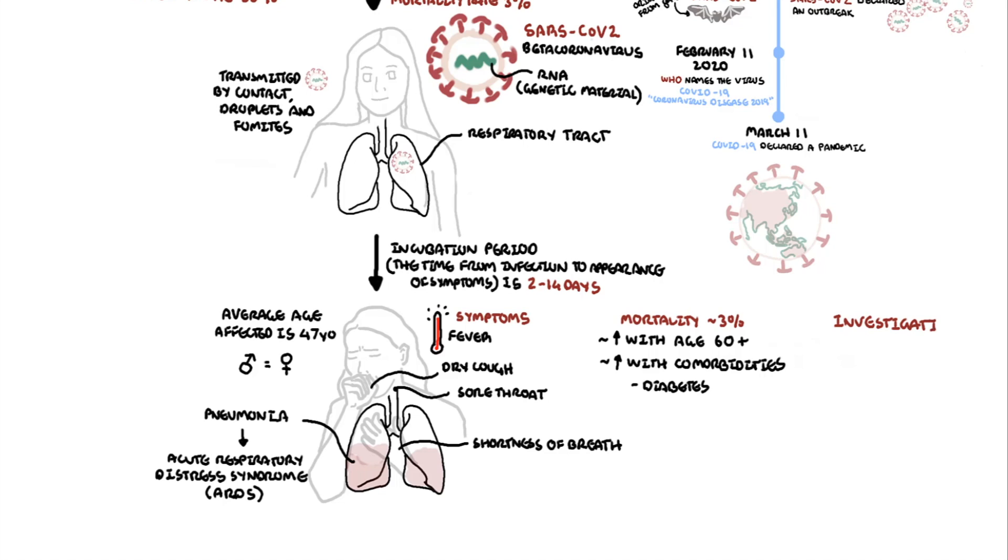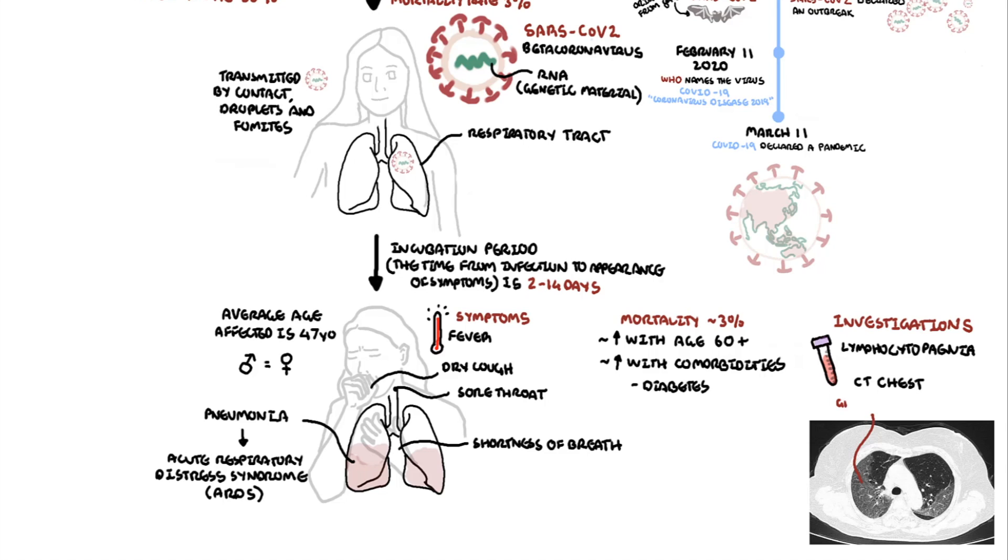Investigation findings of people infected with COVID-19 are lymphocytopenia, so low lymphocyte count in the blood, and CT chest in patients most commonly demonstrates ground glass opacification consistent with viral pneumonia. Diagnosis of COVID-19 is made with PCR, identifying the COVID-19 viral RNA, the genetic material.